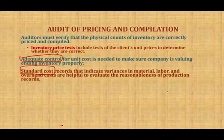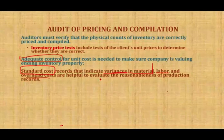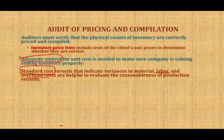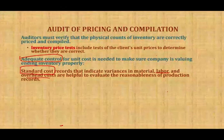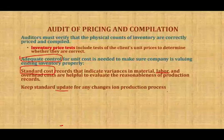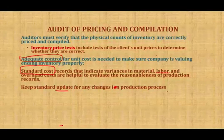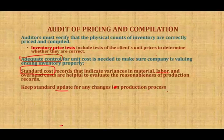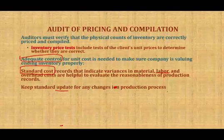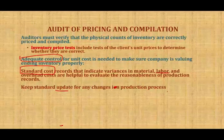After we establish the standard cost, hopefully the company will have variance analysis. Standard cost records that indicate variance analysis for material, labor, and overhead costs are helpful in evaluating the reasonableness of the production record. At the end of the period, they evaluate what they actually did versus the standard cost. If they do have this, it's a good starting point for the auditor. We also want to make sure the company keeps the standard cost up to date for any changes in the production process.